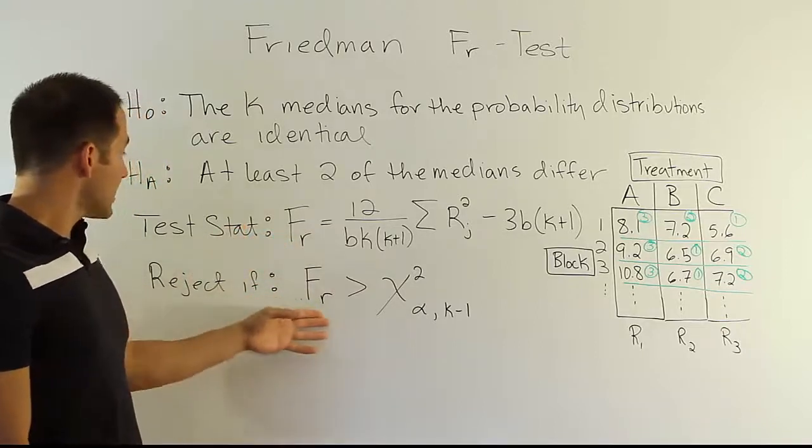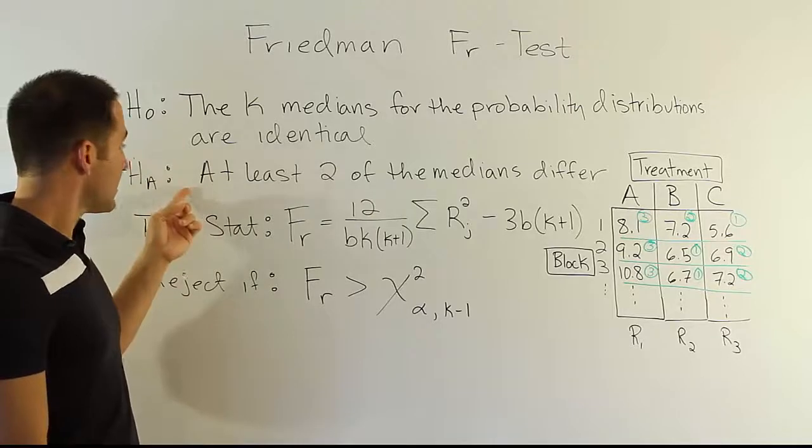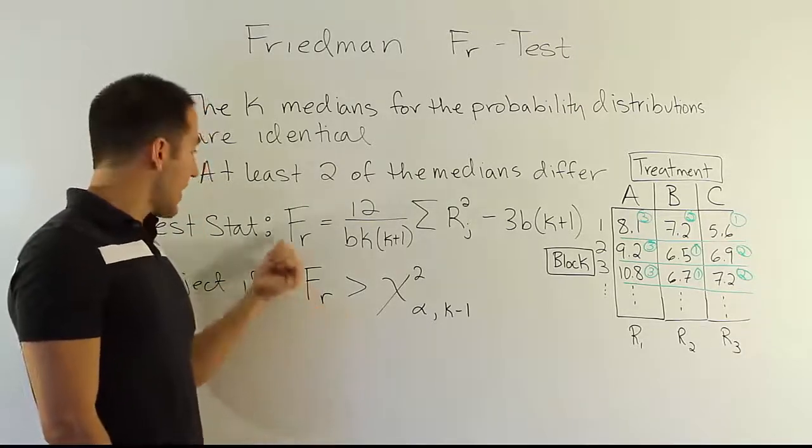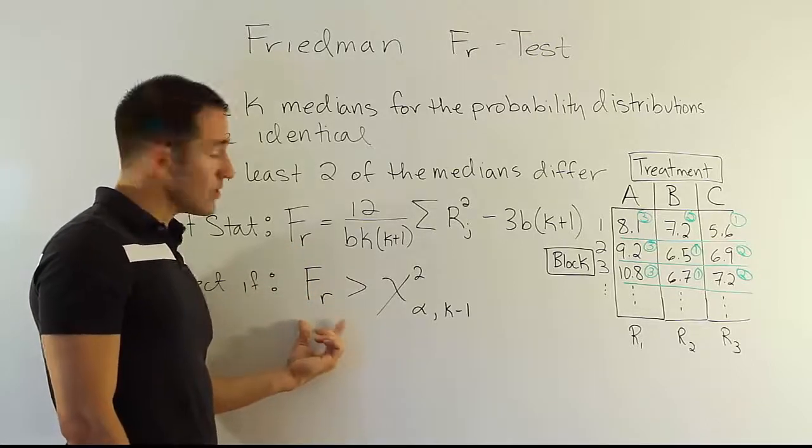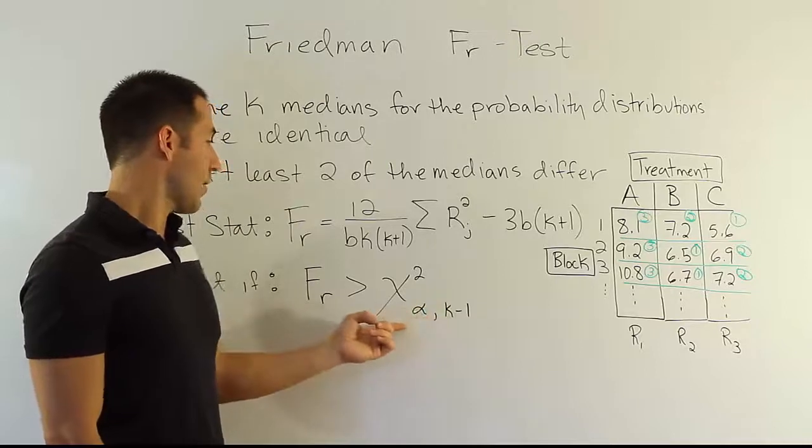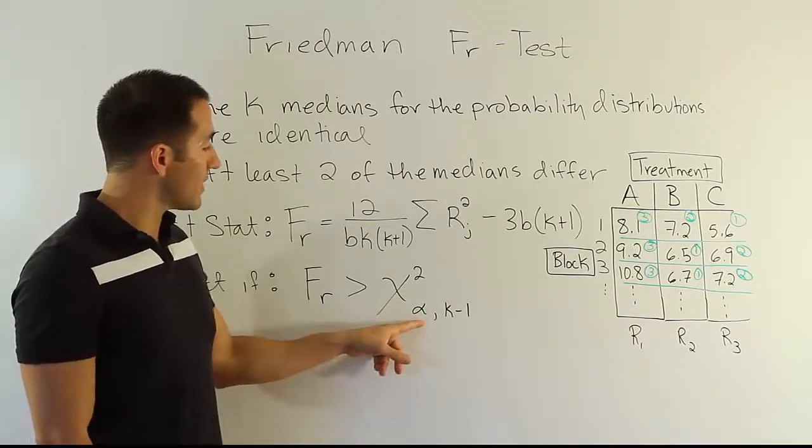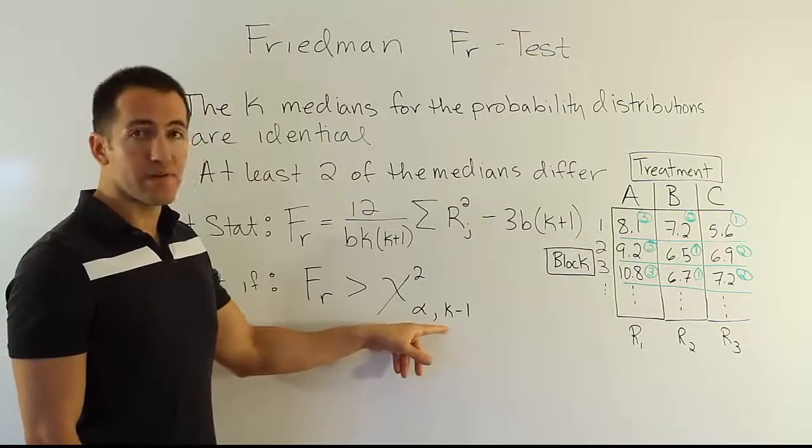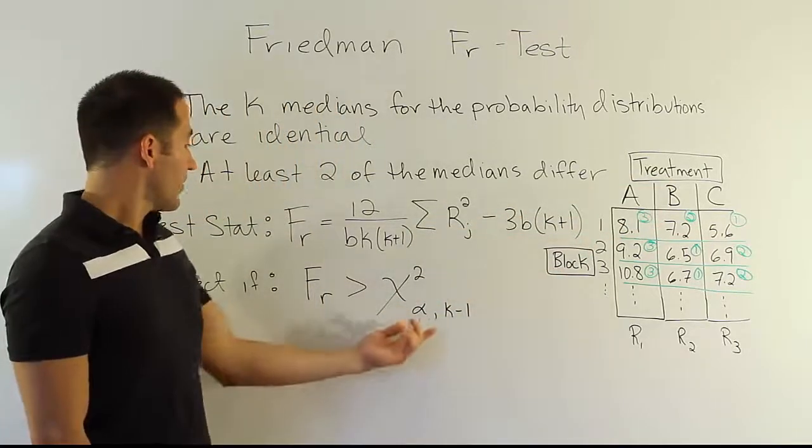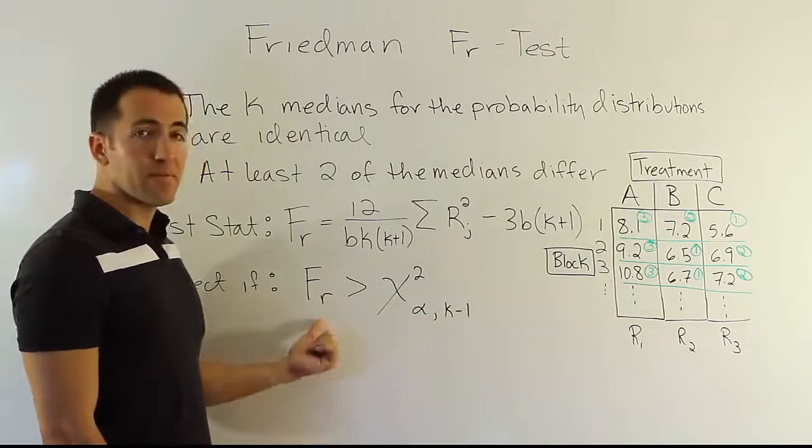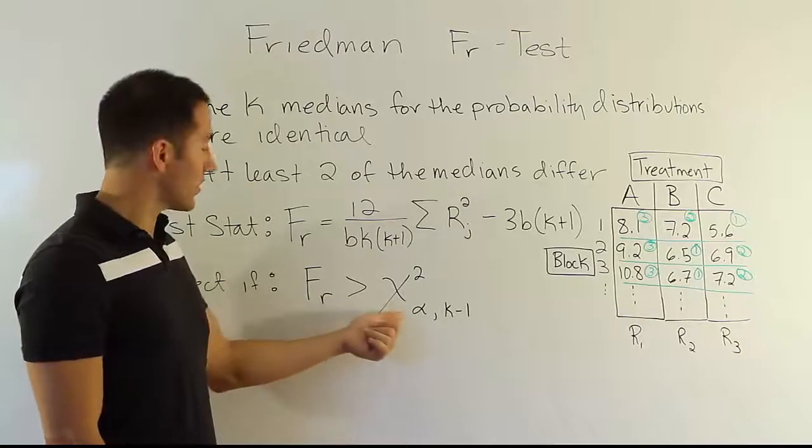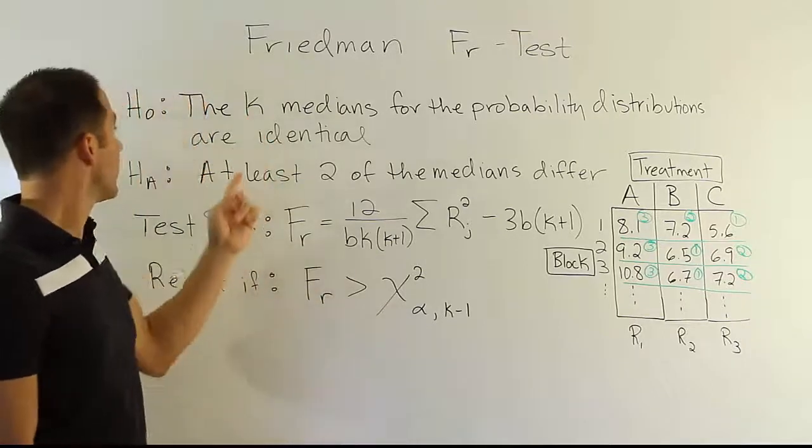And then finally, you will reject H0 in favor of HA if you see that this is true. The FR test stat actually has a chi-square distribution, so it's basically very similar to the Kruskal-Wallis H test. In fact, you have the exact same structure for the critical value. You'll have some significance level, K minus 1 degrees of freedom, where K represents the number of treatments that you're dealing with. You'll look that value up, and then compare it to your Friedman FR test statistic. If the FR test statistic is large, larger than the critical value, you reject H0 and support HA.